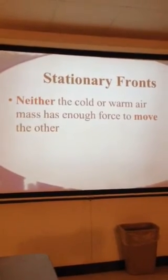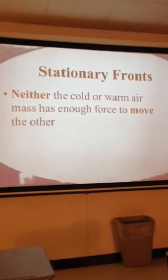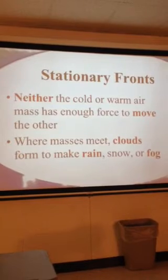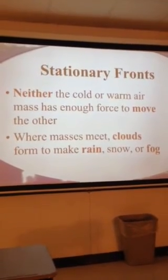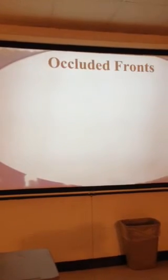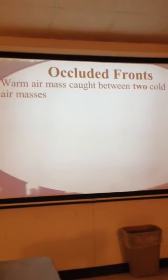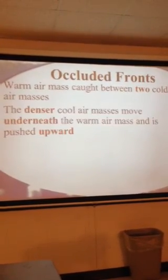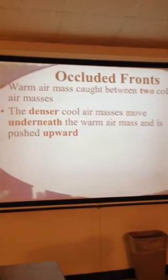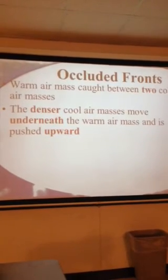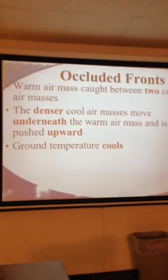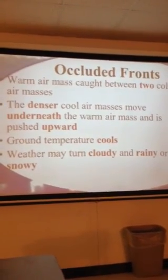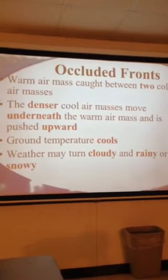A stationary front is when neither the cold nor the warm air mass has enough force to move the other — they are almost at the same temperature. Where the air masses meet, clouds can form to make rain, snow, or fog. An occluded front is the more complex one involving three air masses: a warm air mass caught between two cold air masses — one cold and one cool. The denser cool air masses move underneath the warm air mass, which gets pushed up. The ground temperature cools down, and the weather may turn cloudy and rainy or snowy, with the coldest conditions producing snow, sleet, or hail.